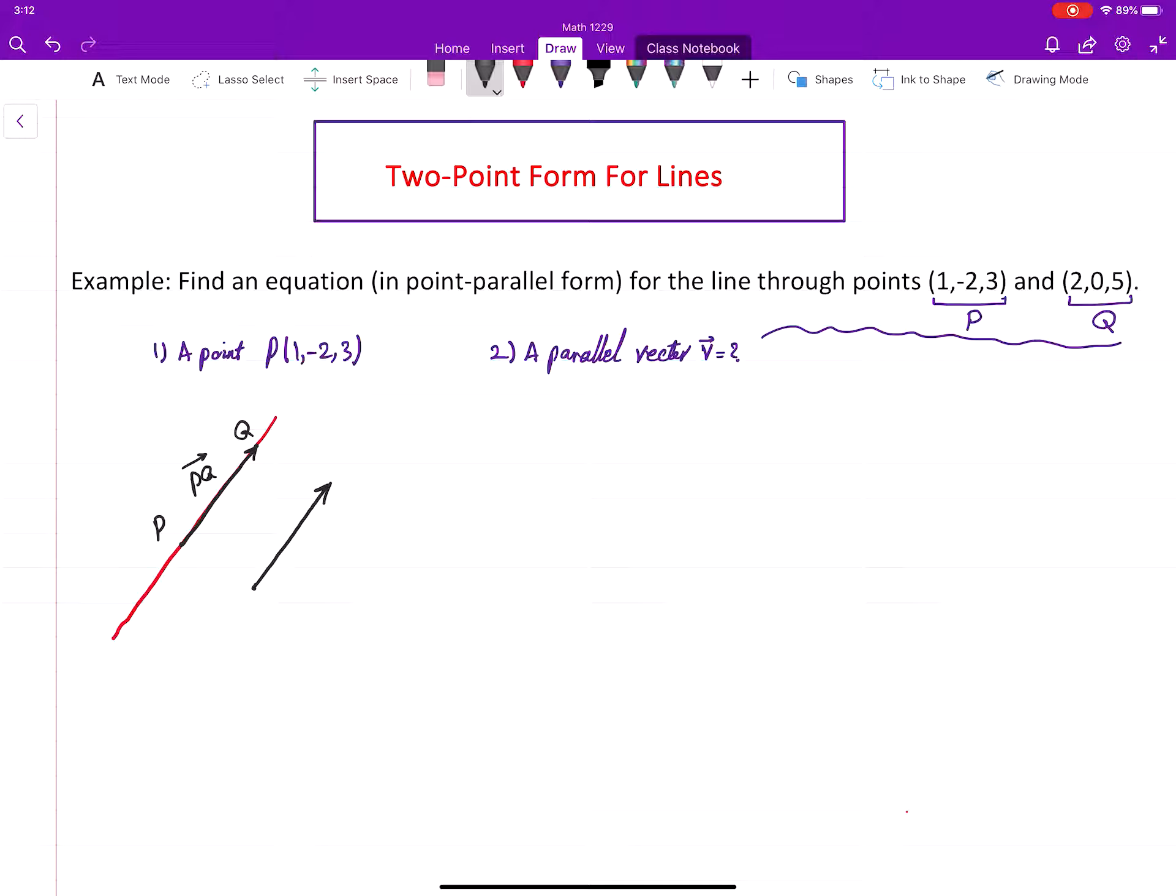So this is the fact I want you to see and understand: that the vector which is equivalent to PQ is parallel to the line. Well, that means what? That means that we can set B to be that equivalent vector.